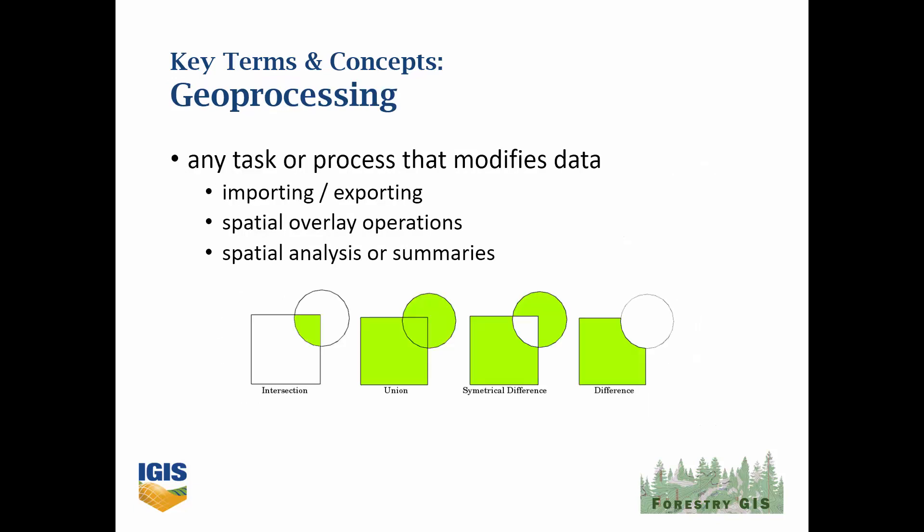Geoprocessing refers to any process that modifies or creates spatial data. It includes all of the classic operations like creating buffers, intersections, or dissolves, but also copying features from one layer to another and even exporting data. In ArcGIS Pro, you'll be using the Geoprocessing Toolbox a lot.